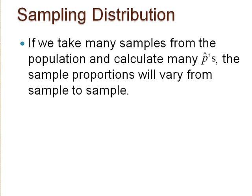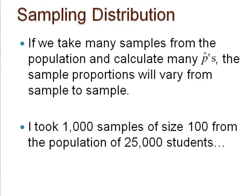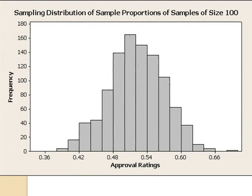I built a sampling distribution of p-hats by taking 1,000 samples of size 100 from our population and obtained 1,000 sample proportions. Here is the histogram. Even though the population values are only approve or disapprove, the distribution of sample proportions can be considered quantitative in nature, where the values fall between 0 and 1. Since the sampling distribution data are quantitative, we can find the mean and standard deviation. The mean of these 1,000 proportions is 0.5163 and the standard deviation is 0.0485. Also, the shape of this distribution looks approximately normal.